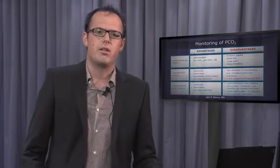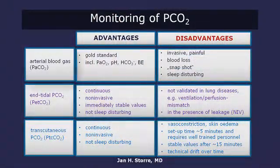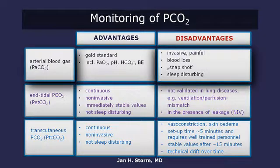I would like to display in more detail the advantages and disadvantages of the different techniques to monitor gas exchange. First, the gold standard arterial blood gas analysis provides the most reliable results. The big advantage is that it gives you the pH, partial pressure of oxygen, partial pressure of carbon dioxide, and further information like electrolytes, bicarbonate, or base excess. However, it is an invasive and painful procedure, and if you need frequent values, you may need an arterial line. It only provides a snapshot of the ventilatory status.